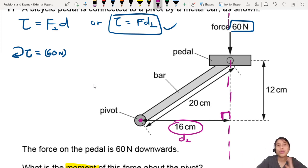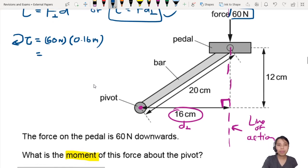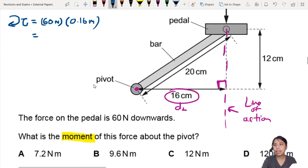The perpendicular distance between the force's line of action - I should label that - the line of action is along this entire dotted line, and that shortest perpendicular distance is 16 cm. So we're going to write 0.16 meters. 60 times 0.16, we will get 9.6 newton meters. That's the moment of this force.